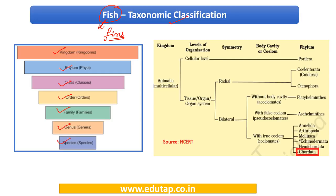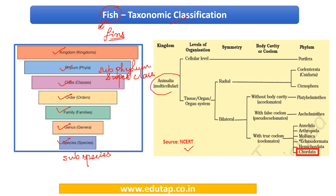There are other classifications in between as well, like under phylum there is also subphylum, and after that we can have a superclass, then class, order, family, genus, species, and even subspecies. Under the Animalia kingdom, the various phylums include Porifera, Coelentrata, Ctenophora, Platyhelminthes, Aschelminthes, Annelida, Arthropoda.